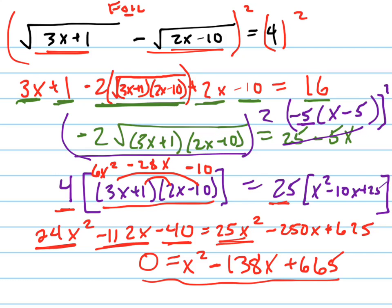And now that might look really ugly, but wouldn't you know it, it factors nicely. x minus 5 and x minus 133. And so your two solutions are going to be x equals 5 and x equals 133.